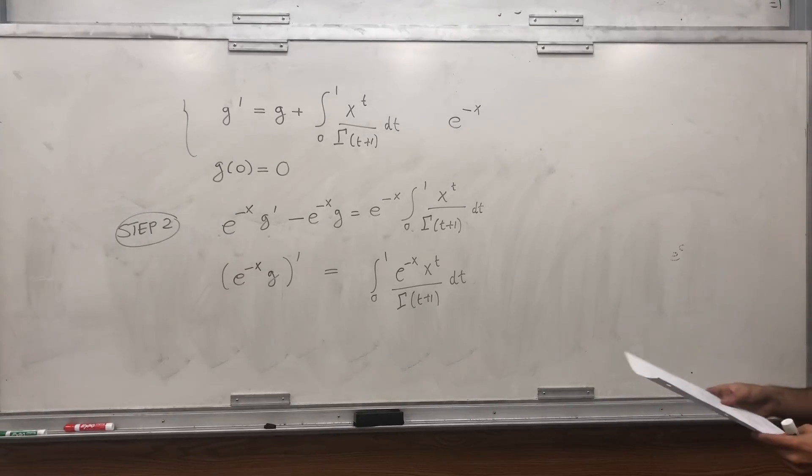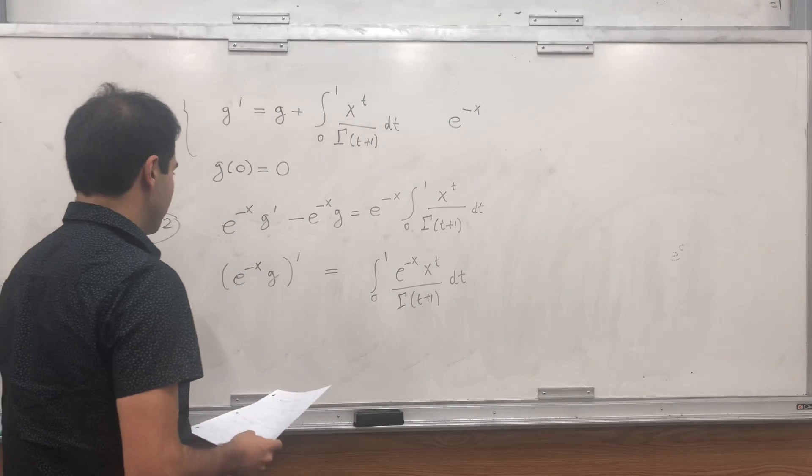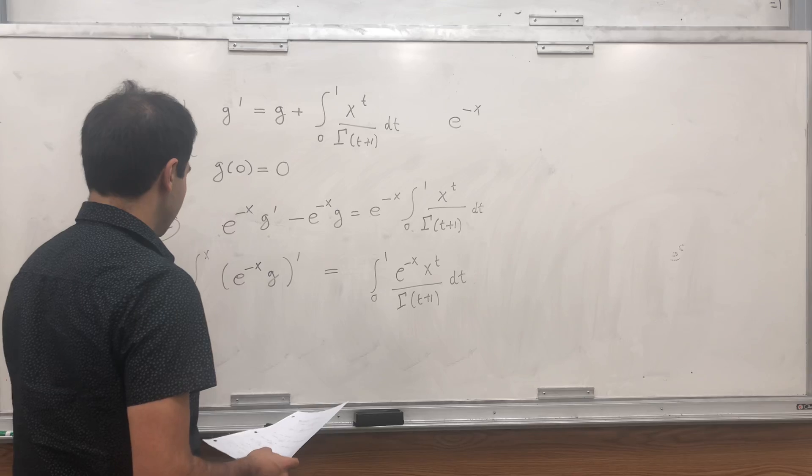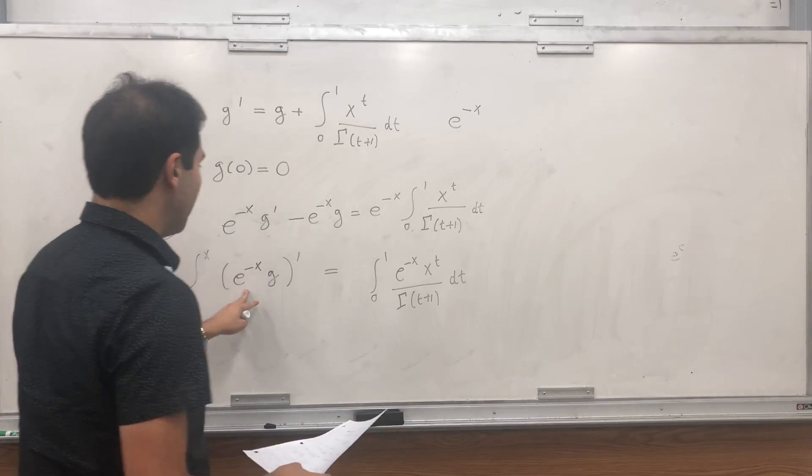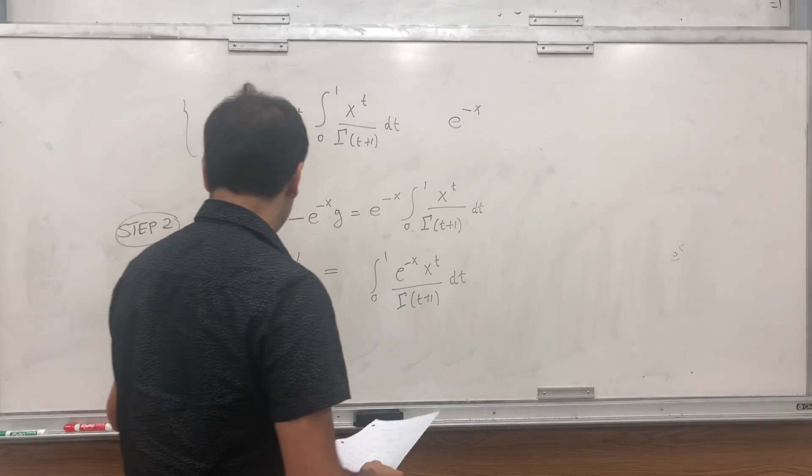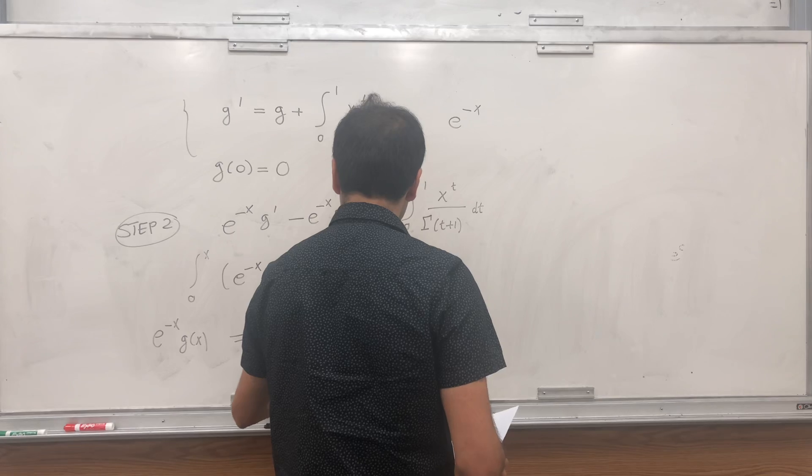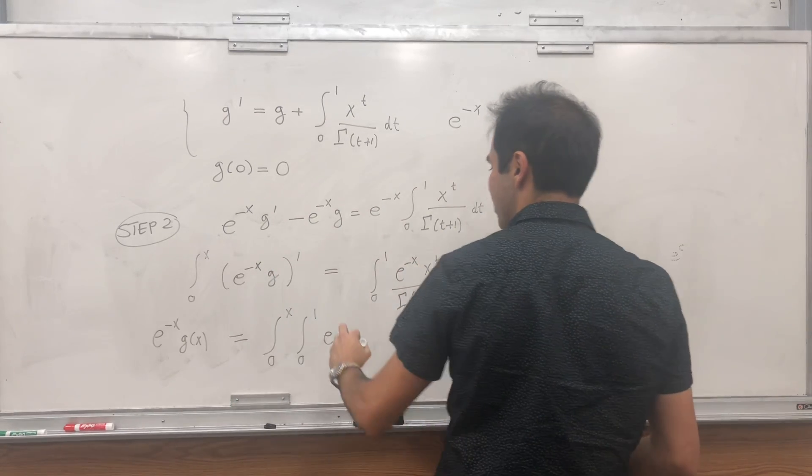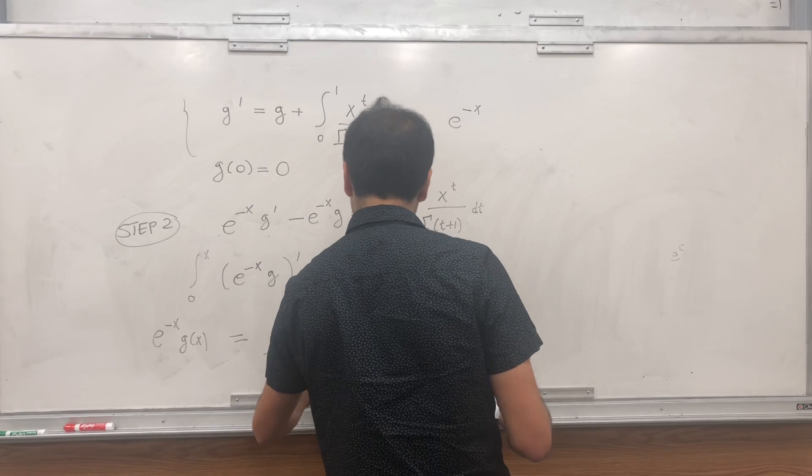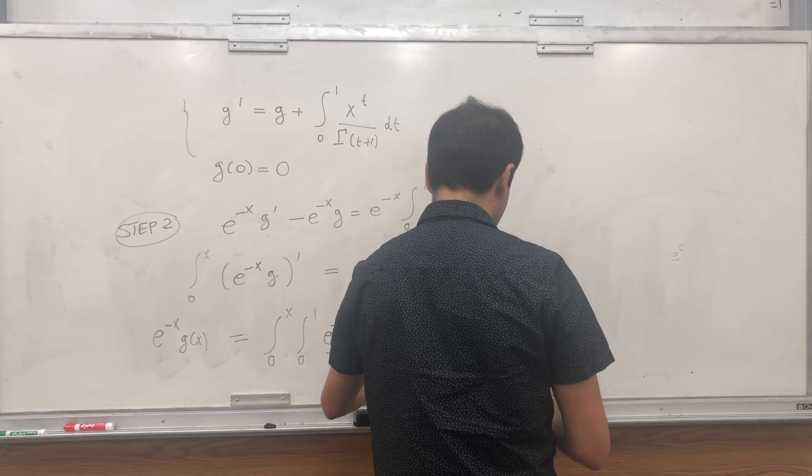And then just integrate this, let's say from 0 to x. And what we get is, if you integrate that from 0 to x, you get e to the minus x g of x minus e to the 0 g of 0. But g of 0 is 0. And you get integral from 0 to x, integral from 0 to 1. Well, let's not use x twice. Let's call it s, e to the minus s, s to the t, over gamma of t plus 1 dt, ds.